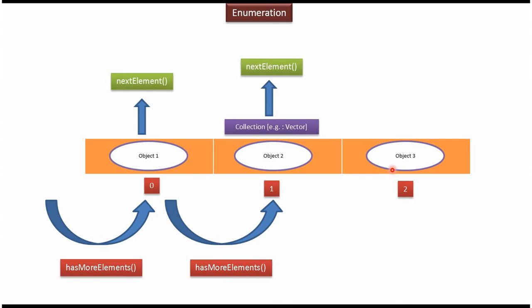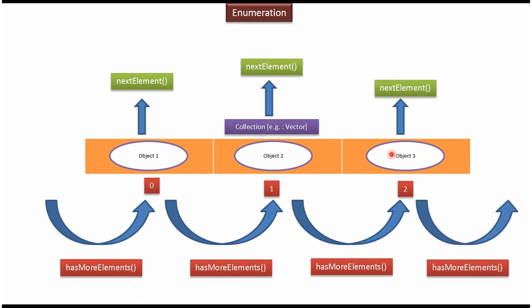To get object 3, again call the hashMoreElements. This method will return true. And using nextElement method, we can get object 3. And again if you call hashMoreElements, it will return false because there are no elements or objects there in the vector.